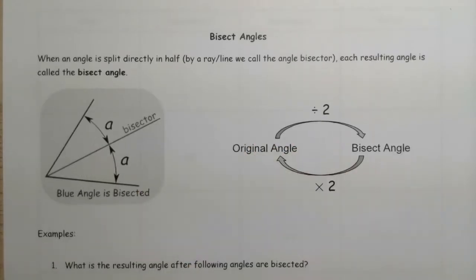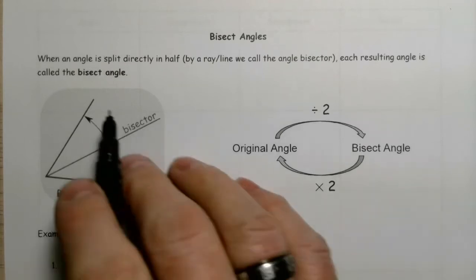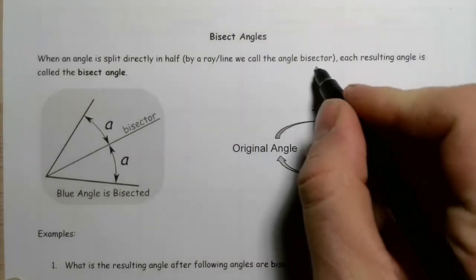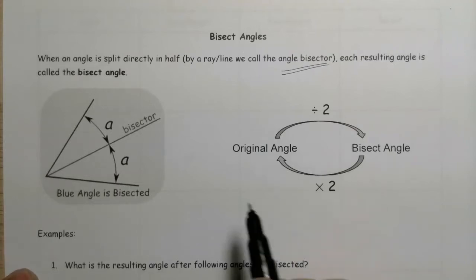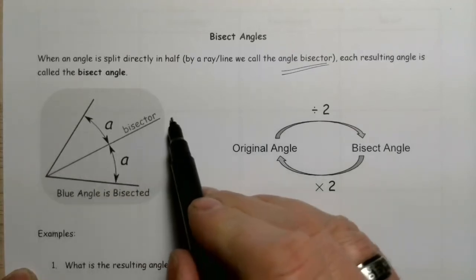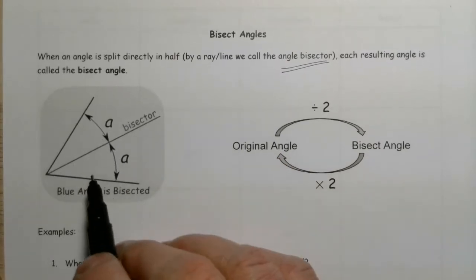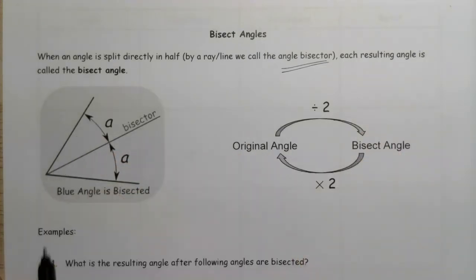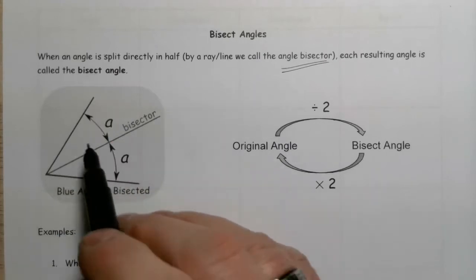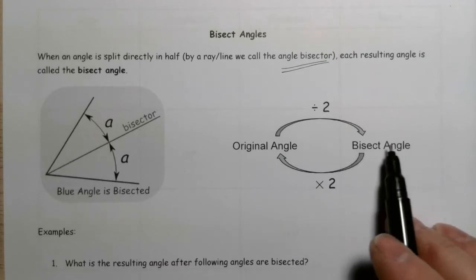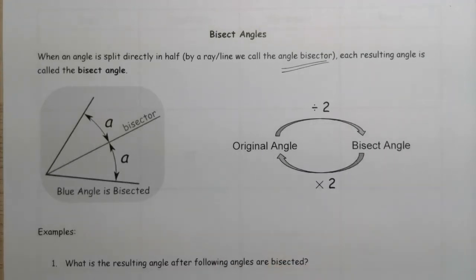Now we're going to look at angle bisectors. When an angle is split directly in half by a ray or a line, that line is the angle bisector. It takes the larger angle and cuts it into two equal angles. Each resulting angle is called the bisect angle. You add those two angles together and you get the original. So you take the original angle and divide it by two to get the bisect angle. If you have the bisect angle, multiply it by two to get the original angle — that's all there is to it.